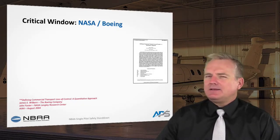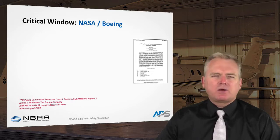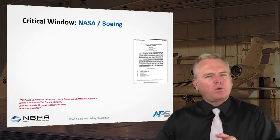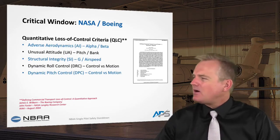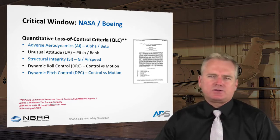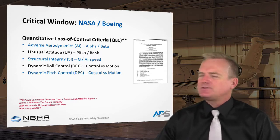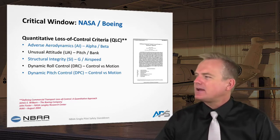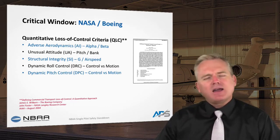Years ago NASA and Boeing did research to determine at what point an airplane is truly out of control. That's important to our discussion of an airplane upset. These are called the Quantitative Loss of Control criteria — the QLC. We already talked about a couple of them: pitch and bank attitude, airspeed, and here they address structural integrity or alpha/beta — angle of attack and sideslip.